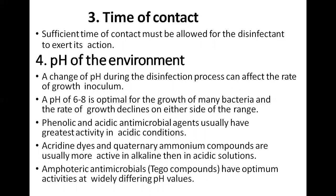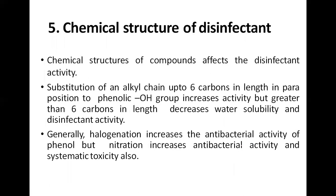A pH of 6 to 8 is optimal for bacterial growth. A change in pH can affect the disinfection process — phenolic and acidic conditions require pH 6 to 8 for bacteria to be killed. Quaternary ammonium compounds are more active in alkaline than acidic solution. Amphoteric antimicrobials like TECO compounds have activities that differ widely at different pH values. Phenolic compounds are less effective in alkaline conditions, resulting in improper decontamination.